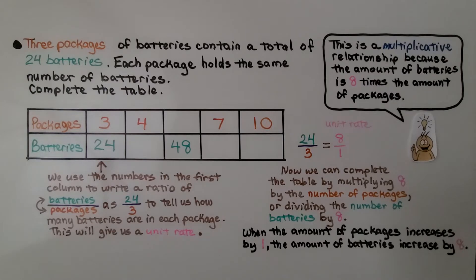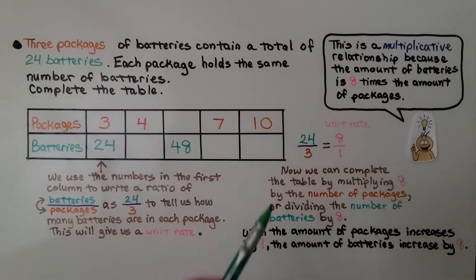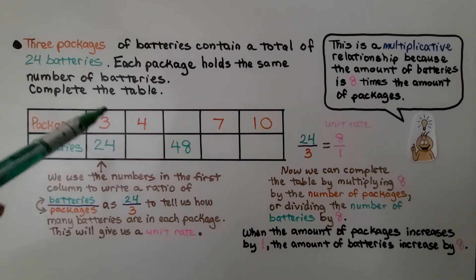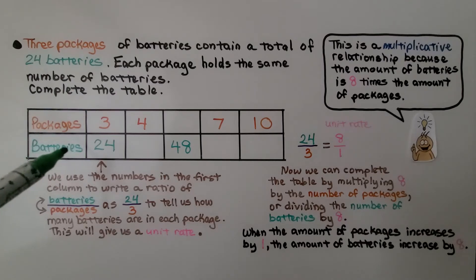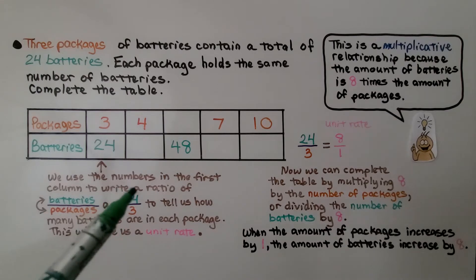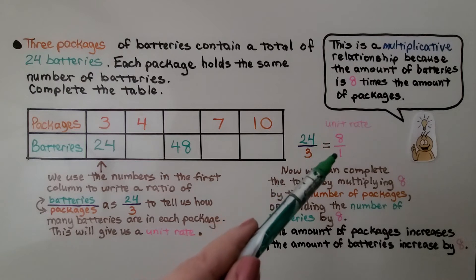3 packages of batteries contain a total of 24 batteries, and each package holds the same number of batteries. Complete the table. We can see there are some missing amounts — here are the packages and here are how many batteries there are. We use the numbers in the first column to write a ratio of batteries to packages. We flip it around: packages are on top and batteries are below, giving us 24 thirds. We divide: 24 divided by 3 gives us a unit rate of 8 batteries to 1 package.